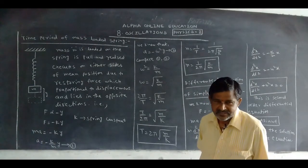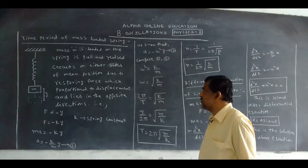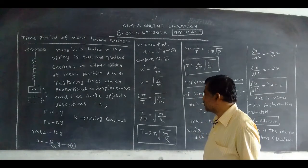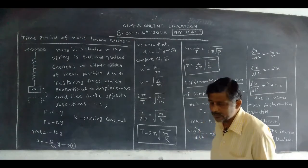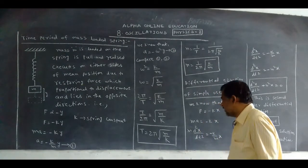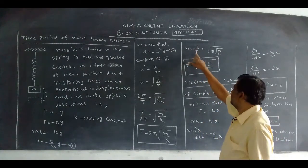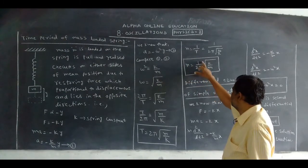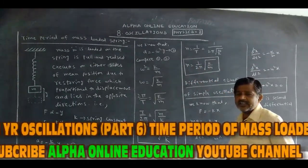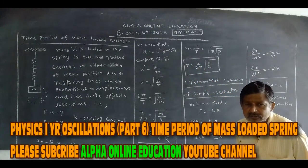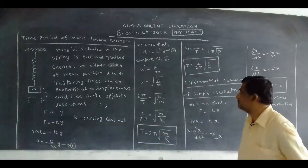The mathematical equation for the time period of a mass-loaded spring is T = 2π√(M/K). We know that frequency N = 1/T, so N = (1/2π)√(K/M). This is the frequency of the mass-loaded spring.